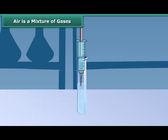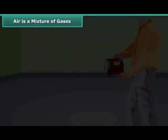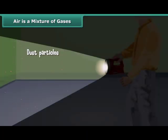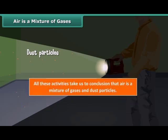Now take lime water in a test tube. With a syringe, blow some air through this solution. You can see that lime water turns milky — this indicates the presence of carbon dioxide in air. Put your torch light on while walking through a dark place. You will see tiny shining particles moving in the beam of torch light. These are the dust particles present in air. All these activities bring us to the conclusion that air is a mixture of gases and dust particles.